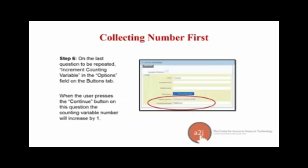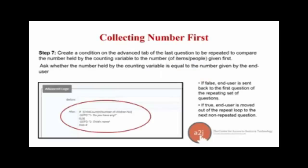Step six: on the last question to be repeated, on the button section, select 'increment counting variable' from the repeat options and put the counting variable in the button section. When the user presses continue on this question, A2J Author will increment and increase the counting variable by one, designating that the end user has gone through the loop one time.